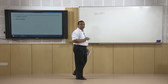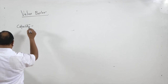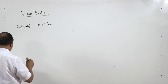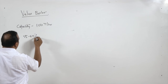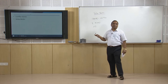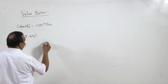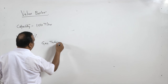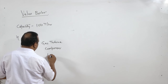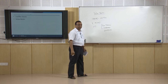Let us now write the characteristics of the Velox boiler. The capacity is 100 tons per hour and the efficiency — you may be surprised — is only 55 to 60 percent. It is a fire tube boiler, not a water tube boiler; that is the uniqueness of this boiler. It is a high pressure fire tube boiler, whereas normally high pressure boilers are water tube boilers. This boiler contains a gas turbine, compressor, feed pump, and generator, but the main feature is that it consists of a gas turbine and compressor.